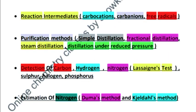Next is reaction intermediates: carbocation, carbanion, free radicals. Their structure, stability and rearrangement of carbocation.